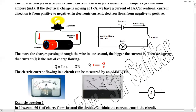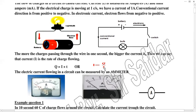We can simply say current is the rate of charge flow from a circuit. What is the meaning of rate? In physics, any quantity which is measured with respect to time is called its rate. Here we measure charge with respect to time — how many charges will flow in a given time. This is called current. The rate of charges in physics is called current.